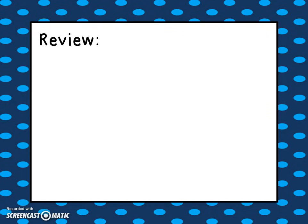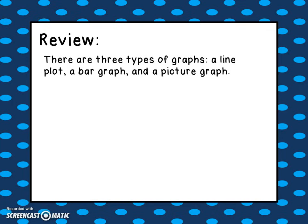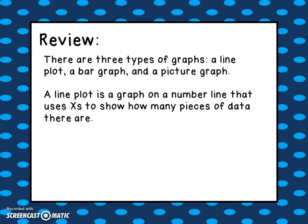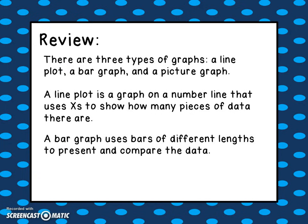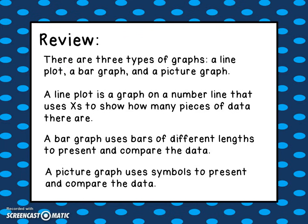Let's review quickly. There are three types of graphs. A line plot graphs data on a number line using X's to show how many pieces of data there are. A bar graph uses bars of different lengths to represent and compare data. And a picture graph uses symbols to represent and compare data.